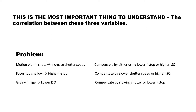With a lower f-stop you get shallower depth; with a higher ISO you possibly introduce more noise — those are the trade-offs. If your focus is too shallow, you need a higher f-stop and compensate with a slower shutter speed or higher ISO. If your image is too grainy, lower your ISO and compensate by slowing the shutter down or lowering the f-stop. If you're shooting indoors, bringing more ambient light into the situation can also resolve these problems.